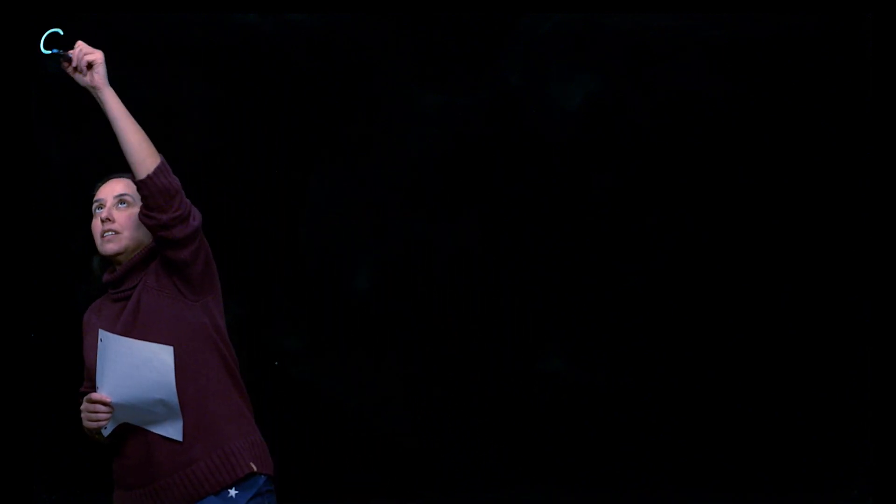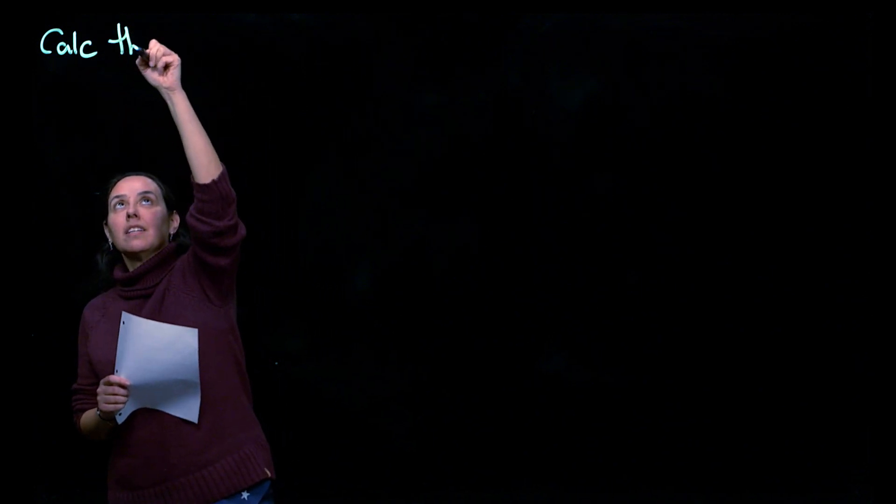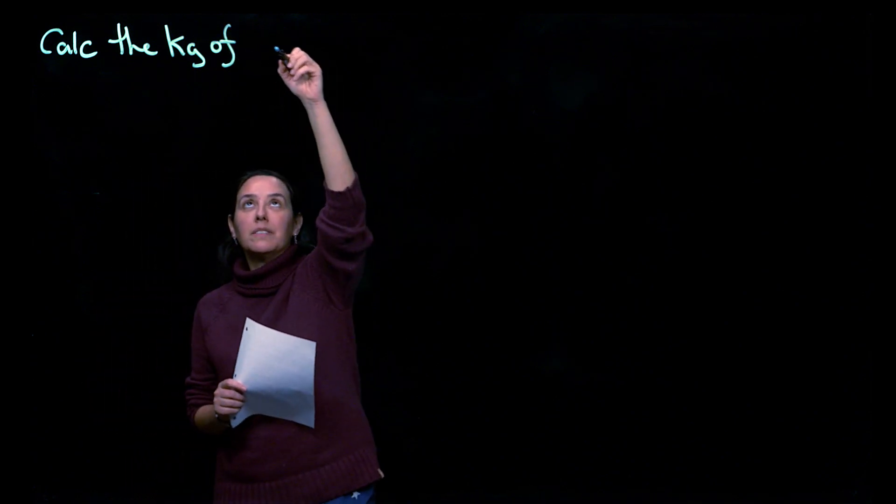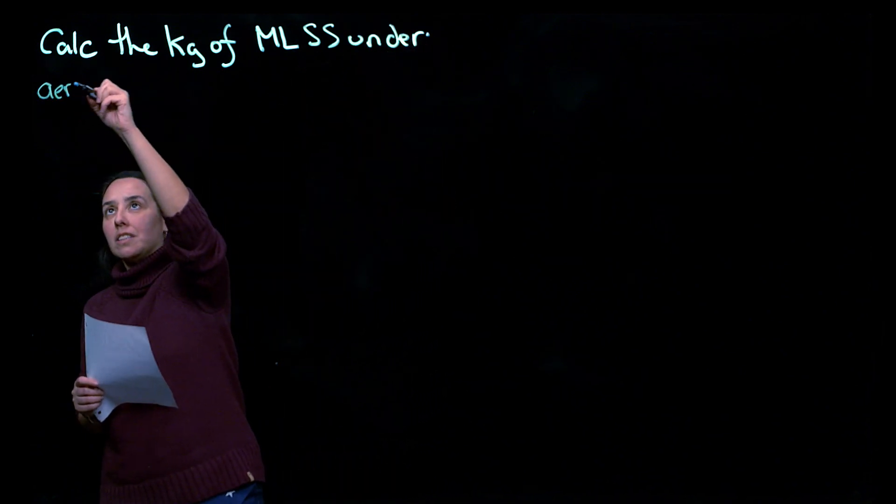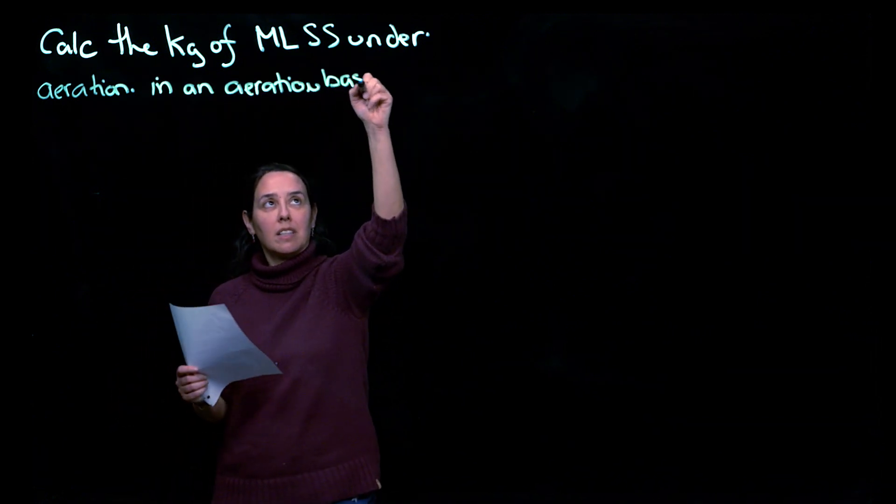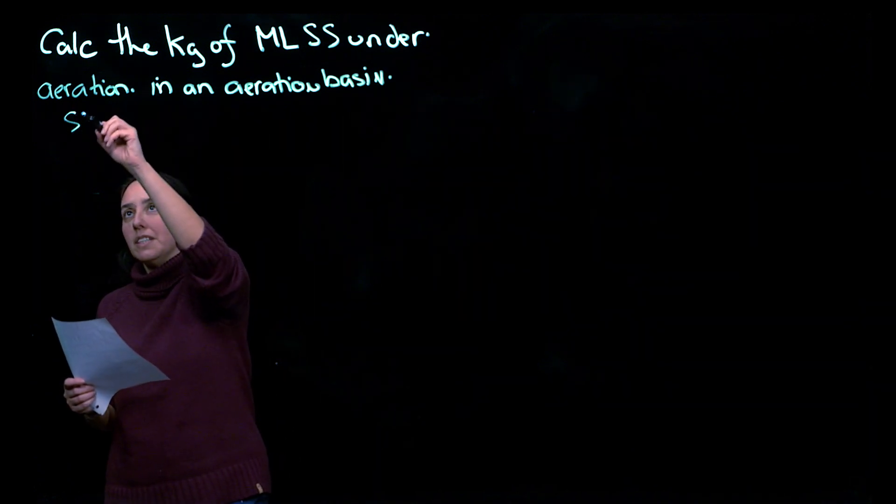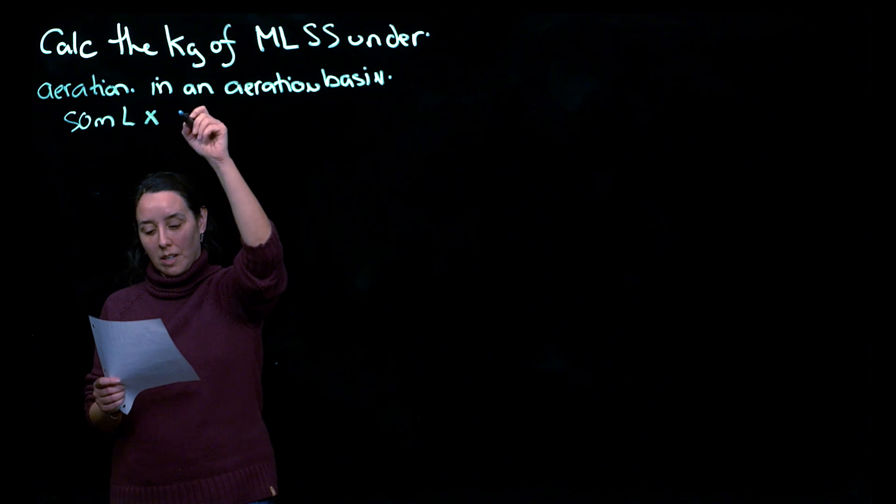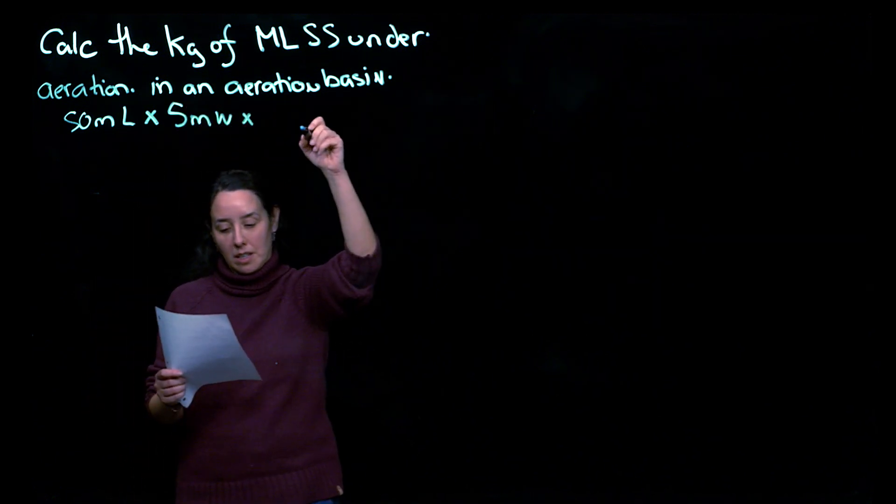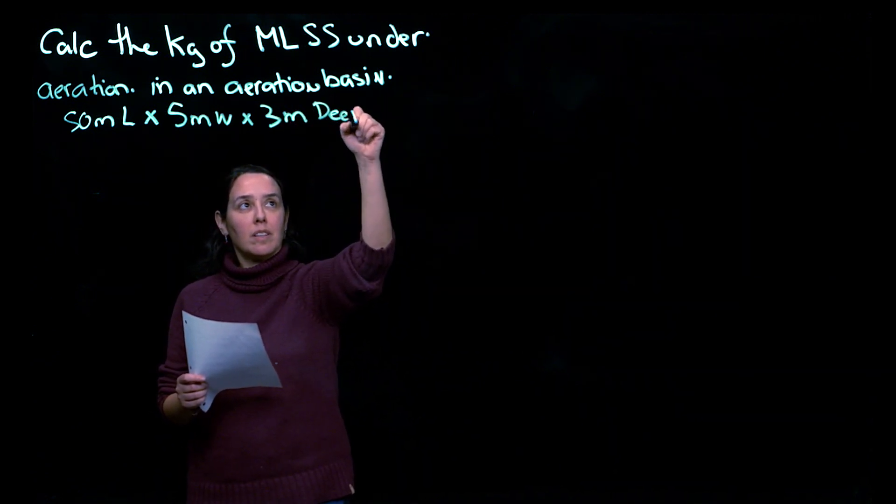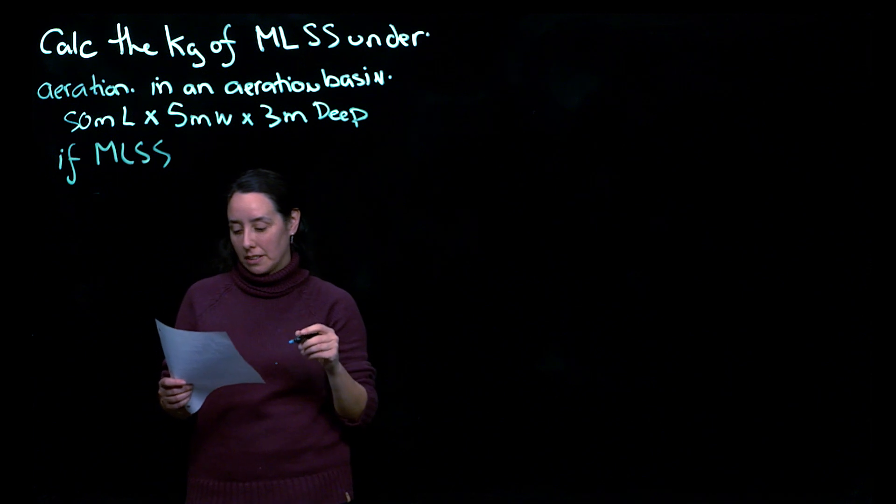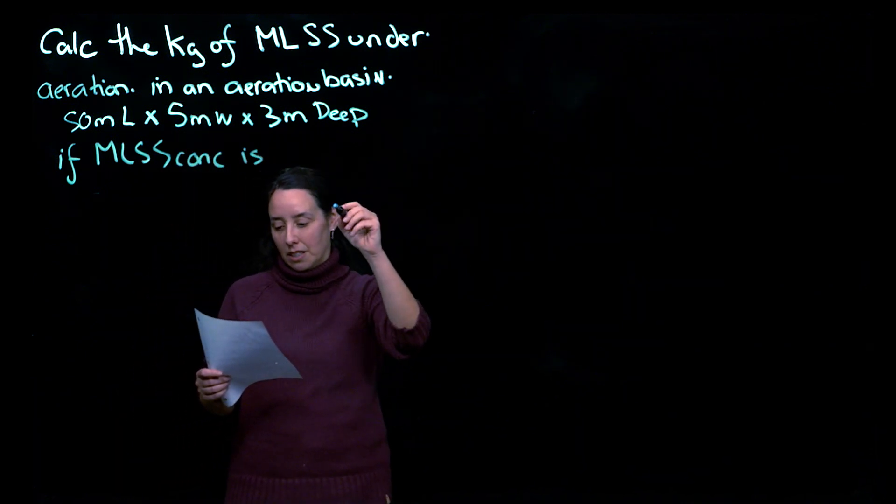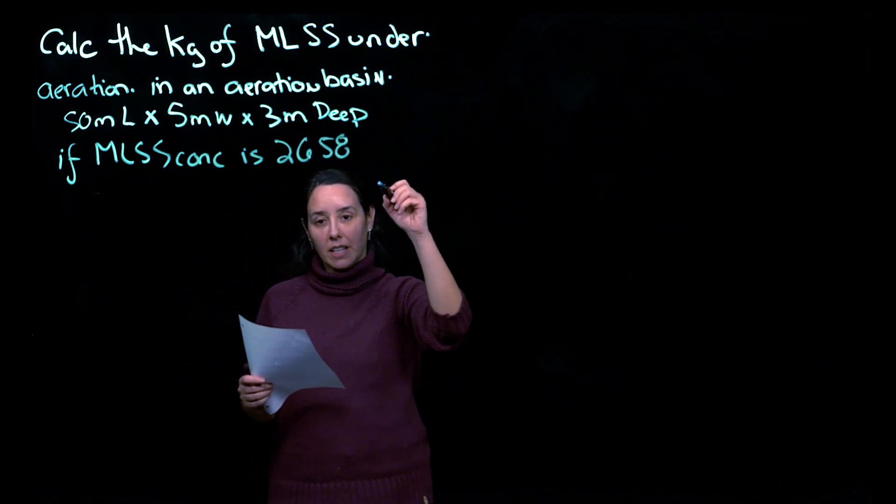So let's just start by writing it out. We're going to calculate the kilograms of MLSS, so mixed liquor suspended solids, in an aeration basin that is 50 meters long by 5 meters wide by 3 meters deep. And we're given if the MLSS concentration is 2658 milligrams per liter.